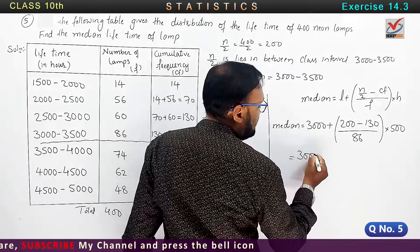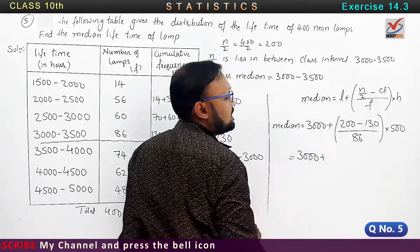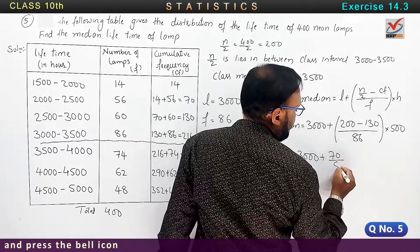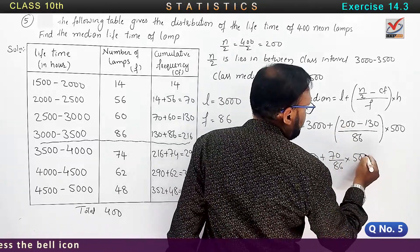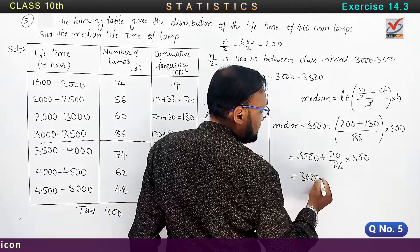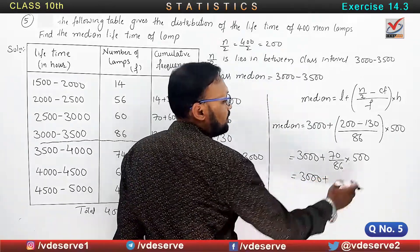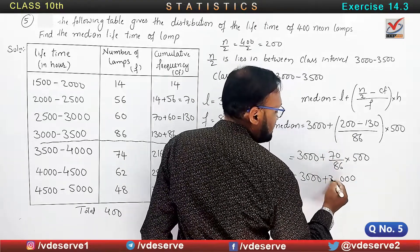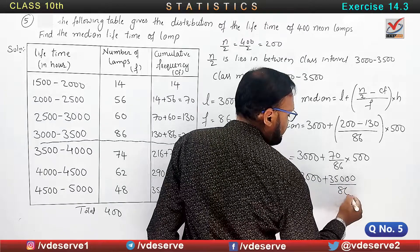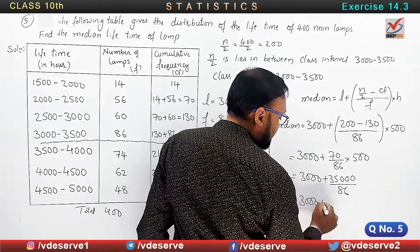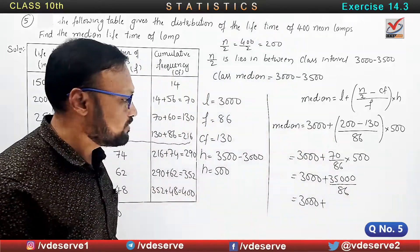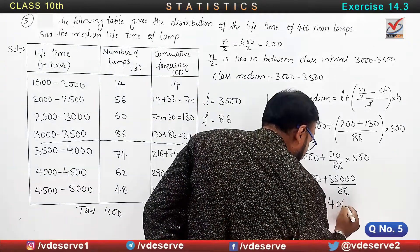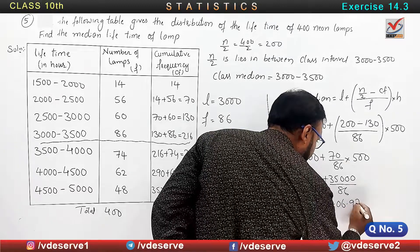Now calculating: 3000 plus... the numerator is 70 into 500 = 35000, divided by 86. That gives approximately 406.978.